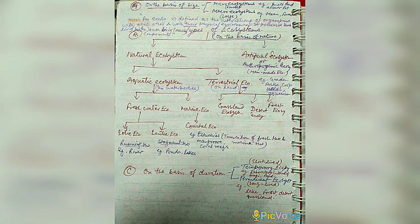On the basis of nature, ecosystems are of two types: natural ecosystem and artificial ecosystem. Artificial ecosystem is also known as anthropogenic ecosystem, meaning man-made. Natural ecosystem is further divided into two parts: aquatic ecosystem, found in water bodies, and terrestrial ecosystem, found on land.